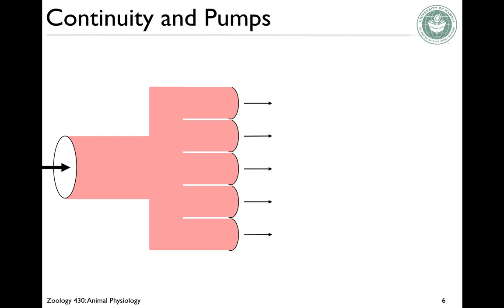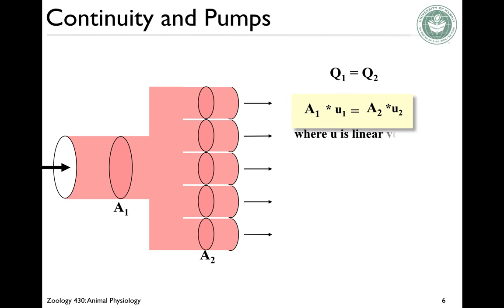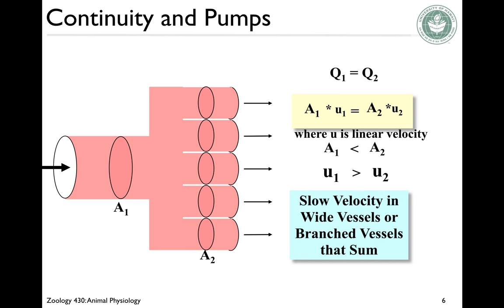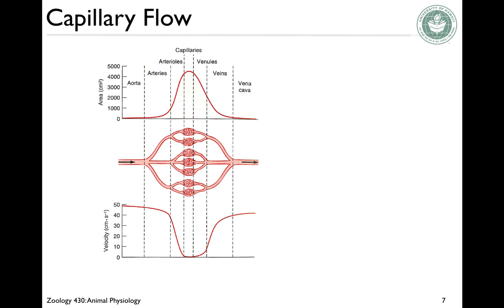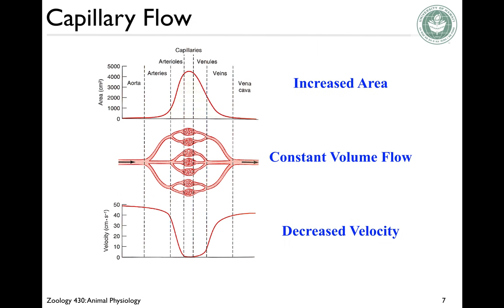The same thing is true in pumps, whether you have a single pump or many branched ones. If the cross-sectional area is smaller, the flow rate will be much higher. You can either have slow velocity in wide or branched vessels, or fast velocity in narrower vessels. This is like the high-velocity pump of a vertebrate heart, whereas the branched pump is more like a low-velocity pump, like cilia in a sponge. Capillary slow flow results from a really increased area, maintaining constant volume and resulting in decreased velocity.